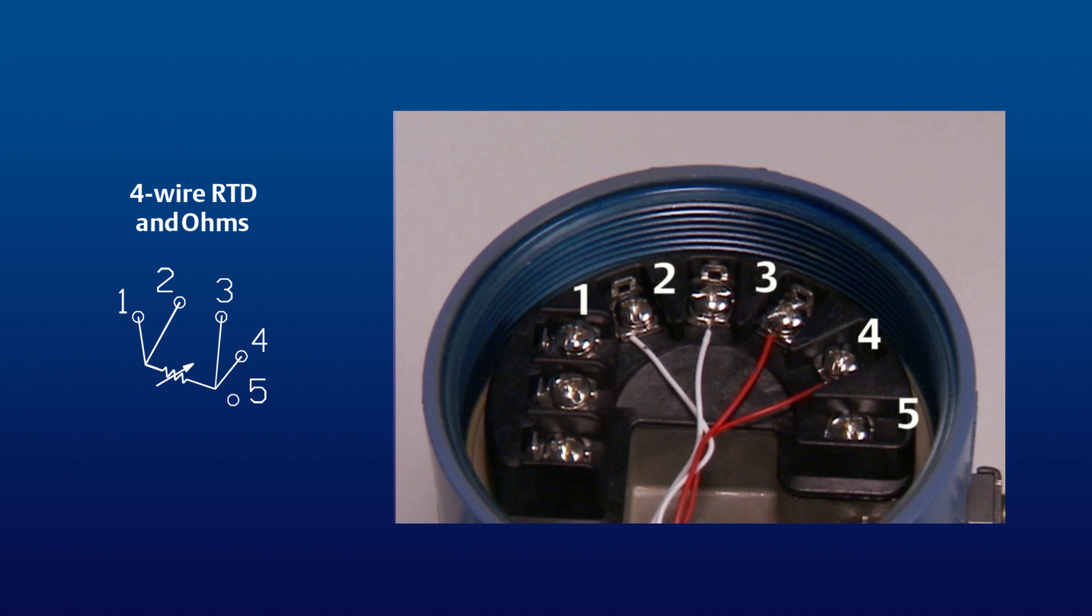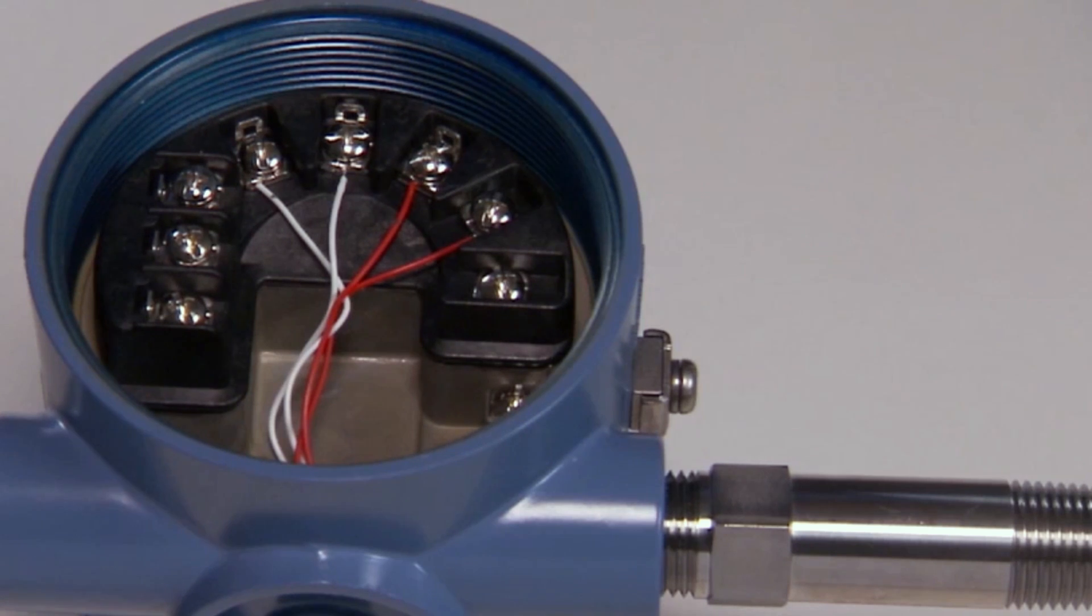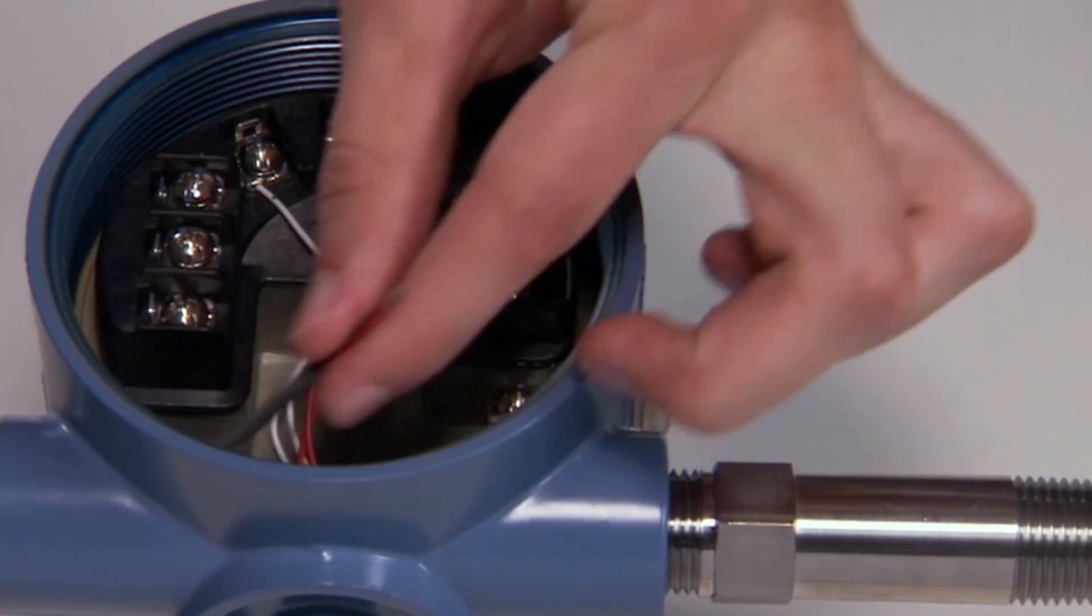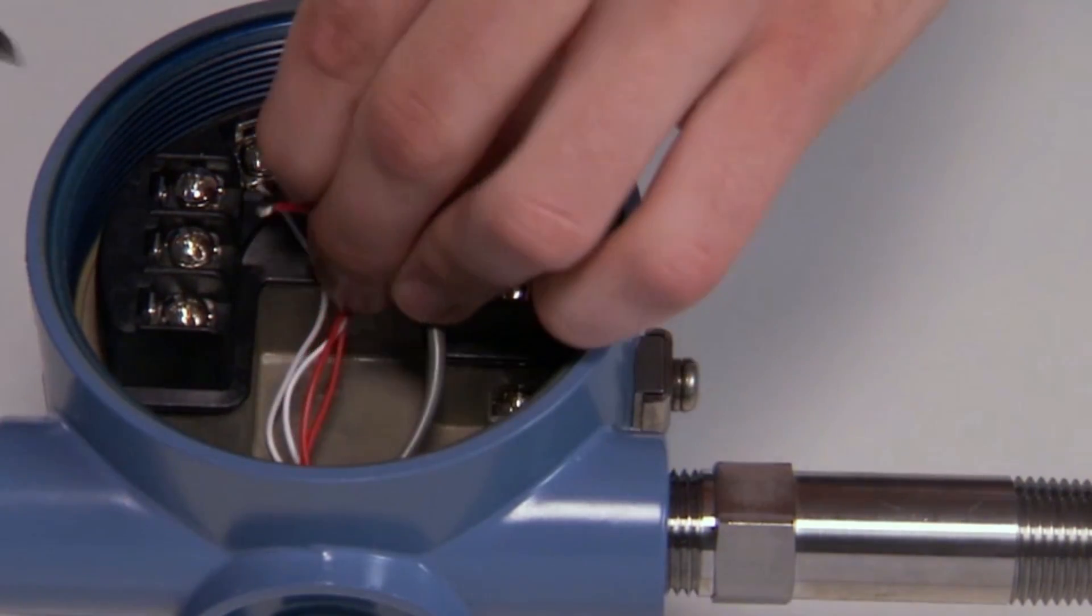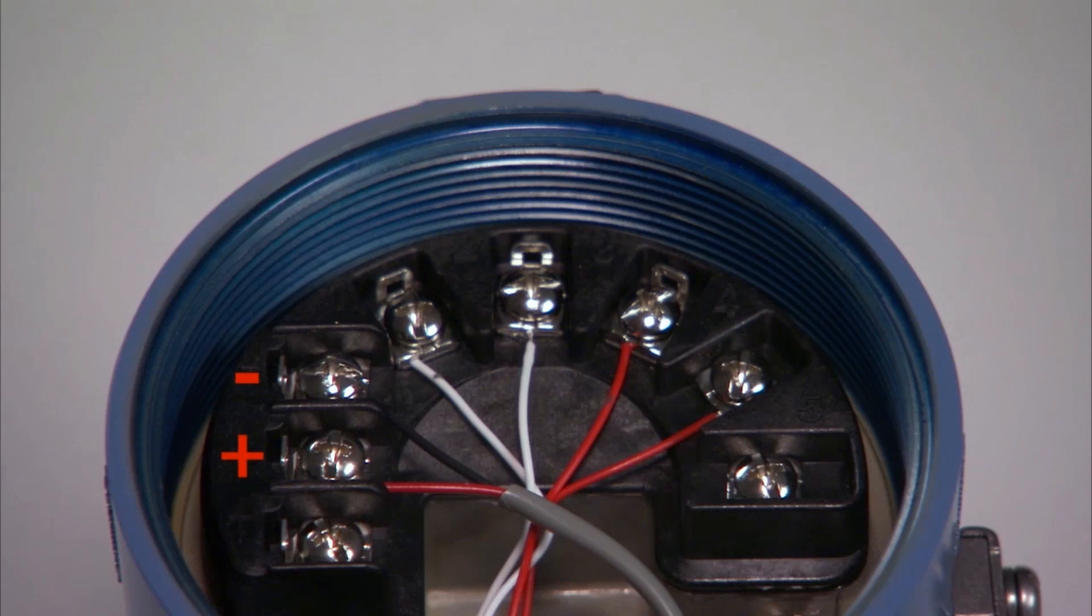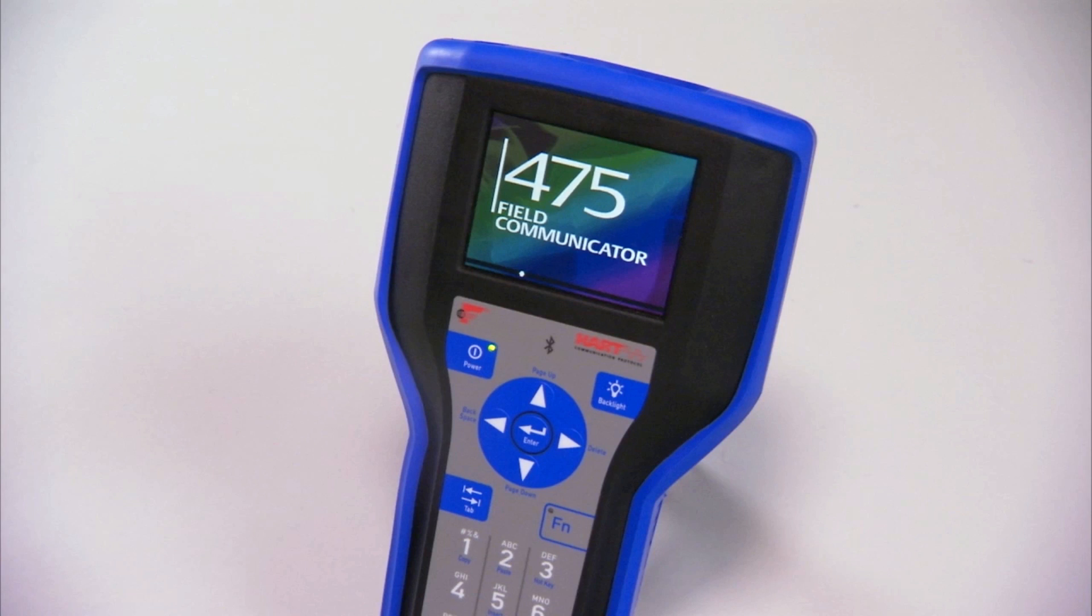Next, insert the power wires through the opposite side conduit entry and attach to the positive and negative terminals. After wiring is complete, the field communicator like the 475 can be used to configure the sensor.